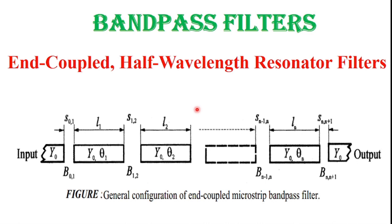This is the general configuration of the end-coupled microstrip band pass filter. Each open-end microstrip resonator is approximately a half guided wavelength (lambda/2) at the mid-band frequency of the band pass filter. The coupling from one resonator to the other is through the gap between two adjacent open ends, and hence is capacitive. This gap acts as a capacitor and can be represented by J inverters, which reflect high impedance levels to the end of each half-wavelength resonator, causing them to exhibit shunt resonance.